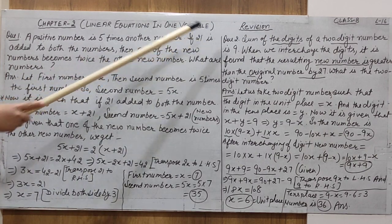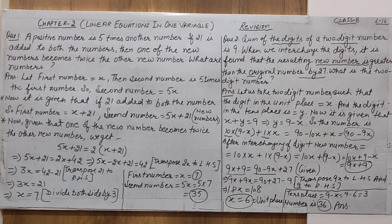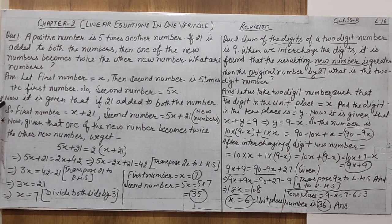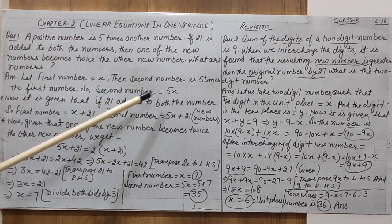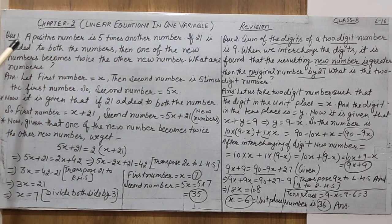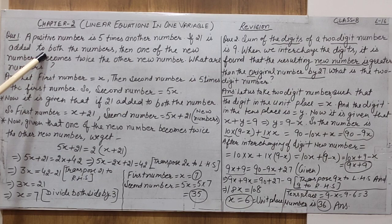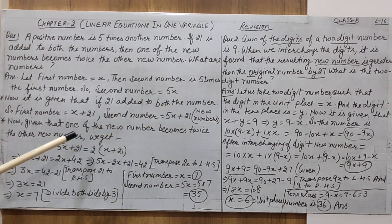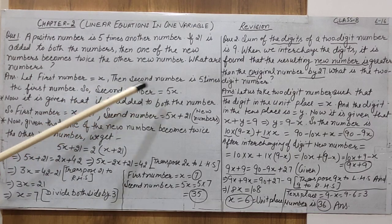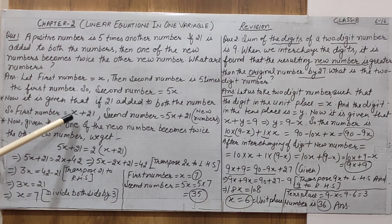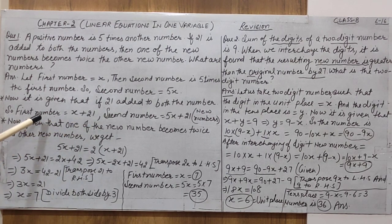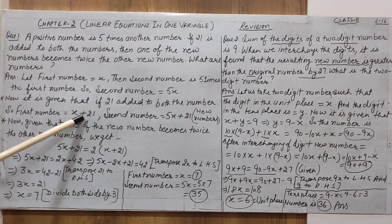Second condition: if 21 is added to both numbers. First number is x, second number is 5x. So 21 is added to the first number: the first new number is x + 21. And 21 is also added to the second number: the second new number is 5x + 21. These two are the new numbers.